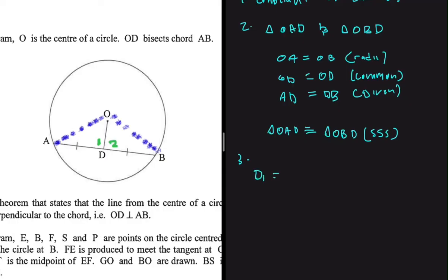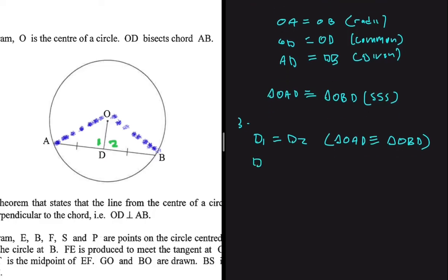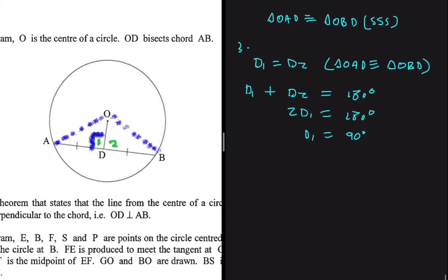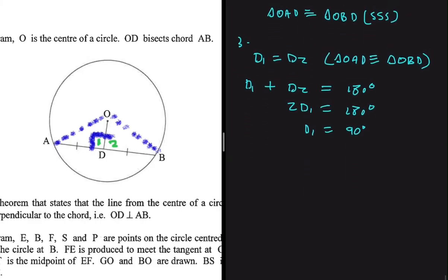D1 should be equal to D2 because triangle OAD is congruent to triangle OBD — all corresponding angles are equal. It's then easy to say that D1 plus D2 equals 180°, since they are angles on a straight line. Since D1 equals D2, we can say 2·D1 equals 180°, so D1 equals 90°.